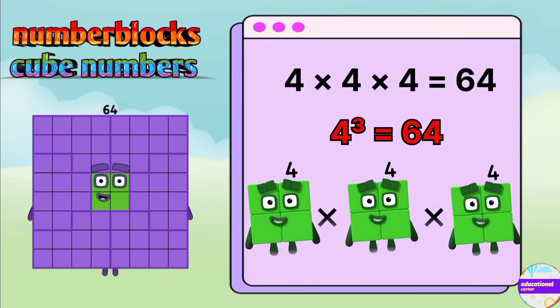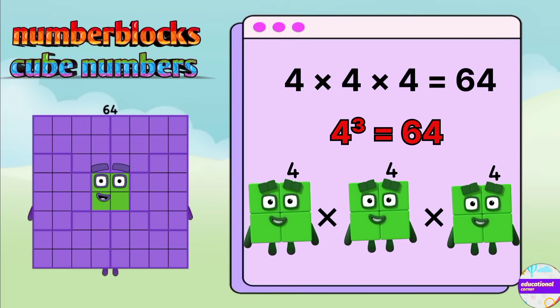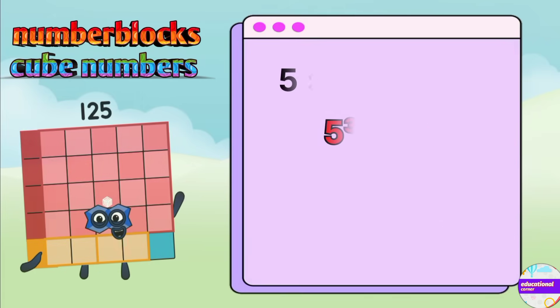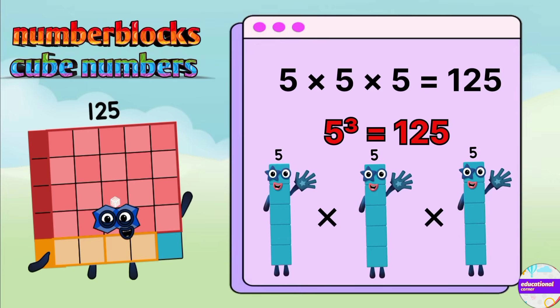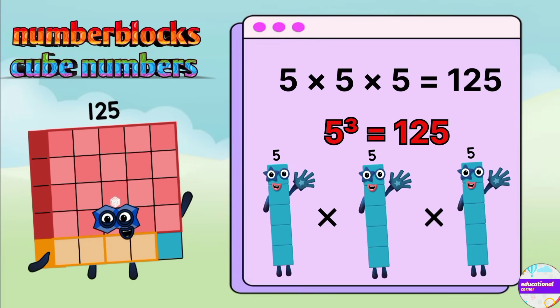64 is a cube of 4. 4 times 4 times 4. 125 is a cube of 5. 5 times 5 times 5.